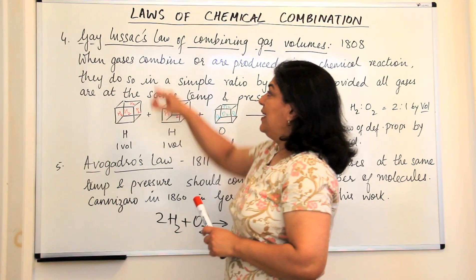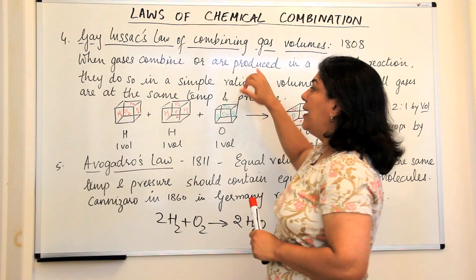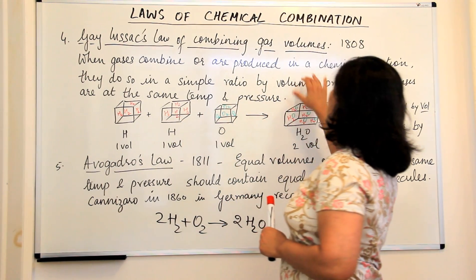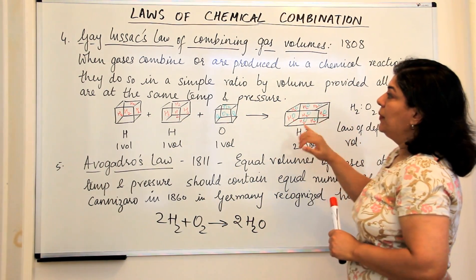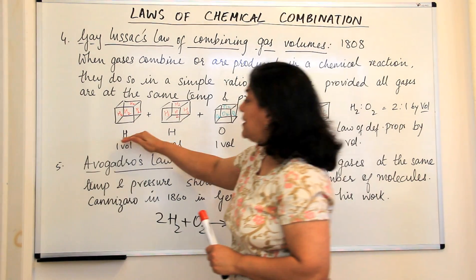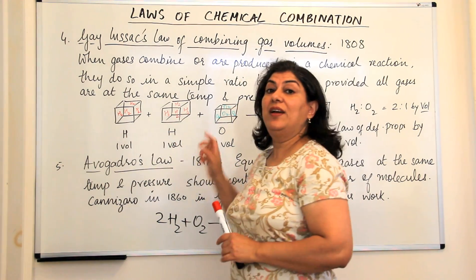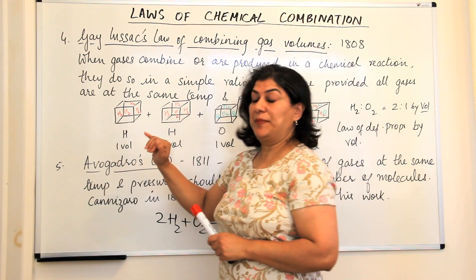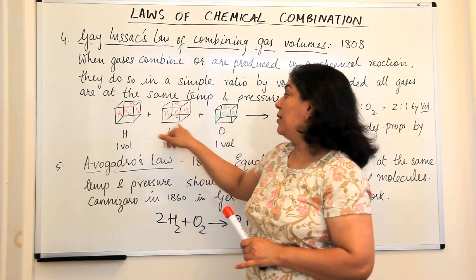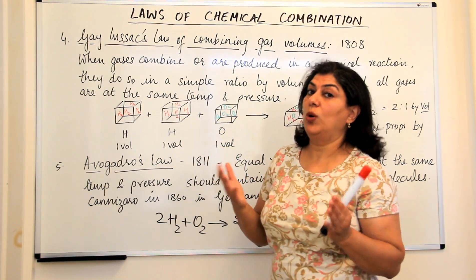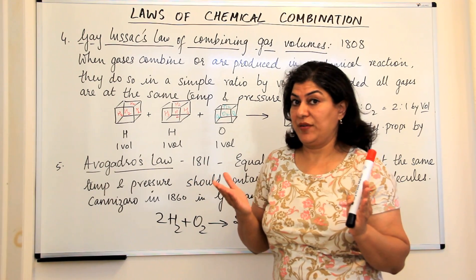Let's understand this. He said that when gases combine or are produced in a chemical reaction they do so in a simple ratio by their volumes. Let's take this example to explain it. Hydrogen combines with oxygen to form water.